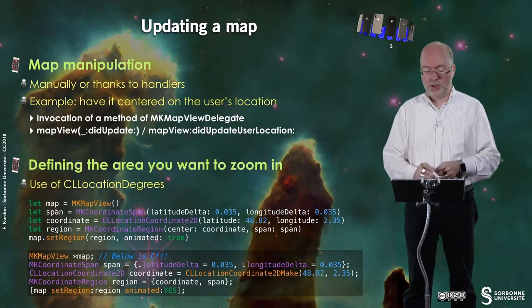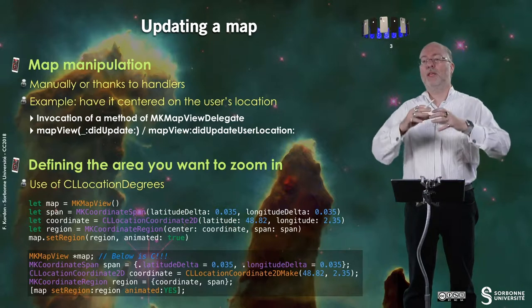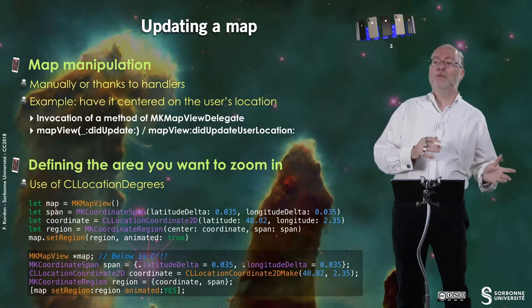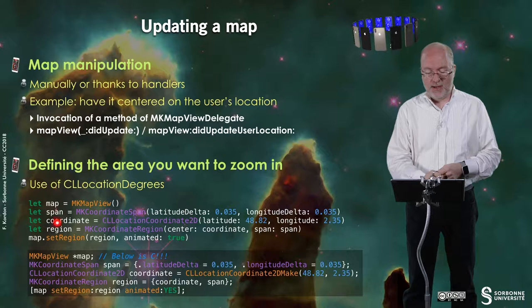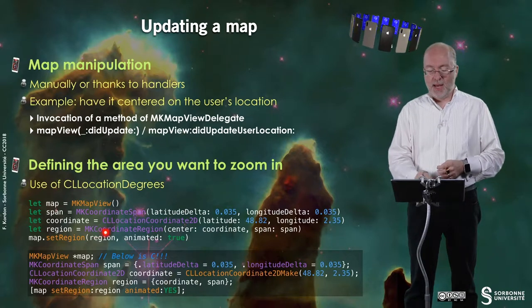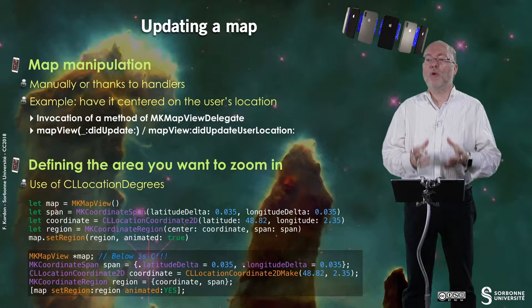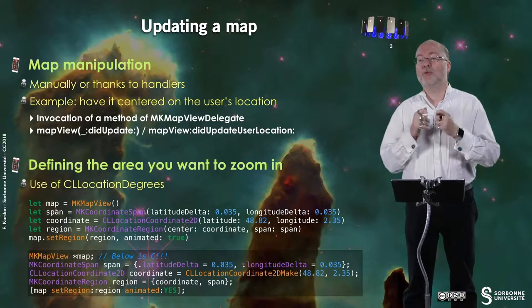I create a map view — it's artificial. I create a span which is the area, and I specify the span of this area in latitude and in longitude by means of degrees. Then I set up some coordinates — here I'm around the campus of Jussieu in Paris — and I create a region and I will request the map to show this region. I can also state that this will be done in an animated way, so if you have the map of the world it will zoom with a nice animation just to the region you specify, or it will move from one region to another one.